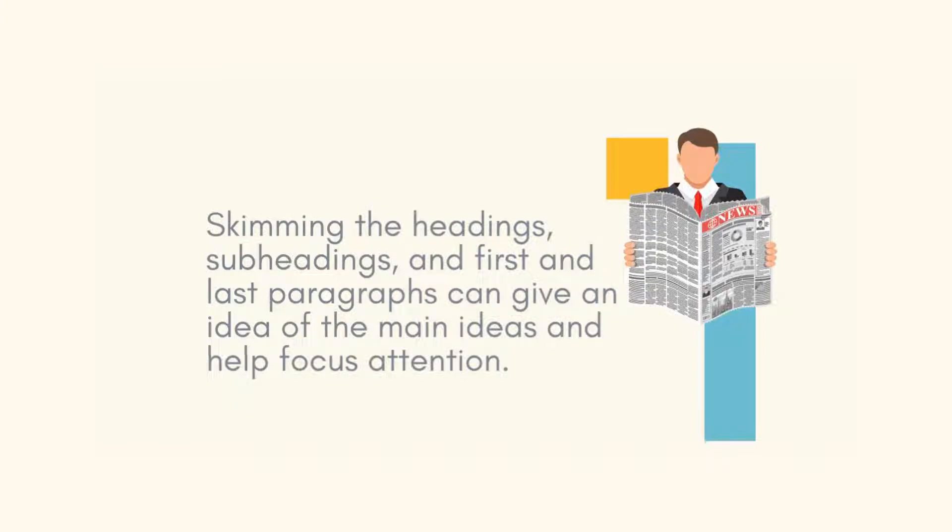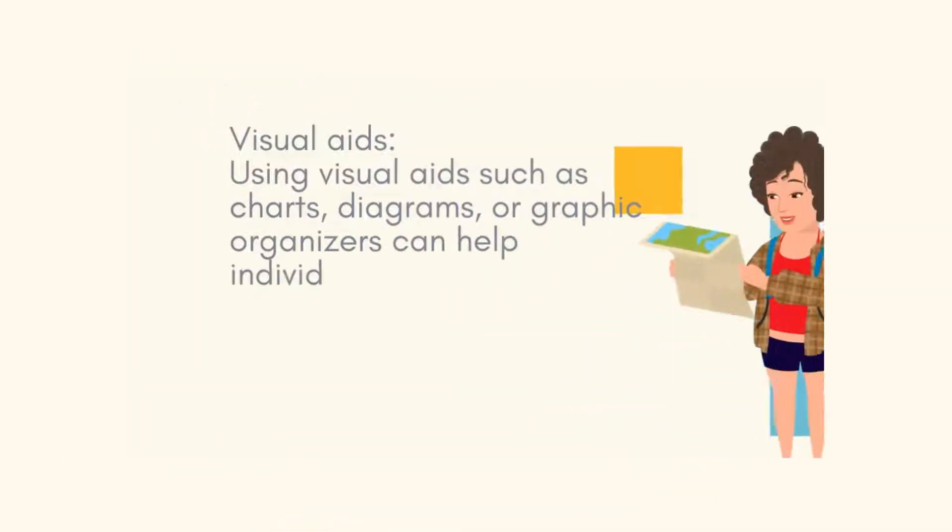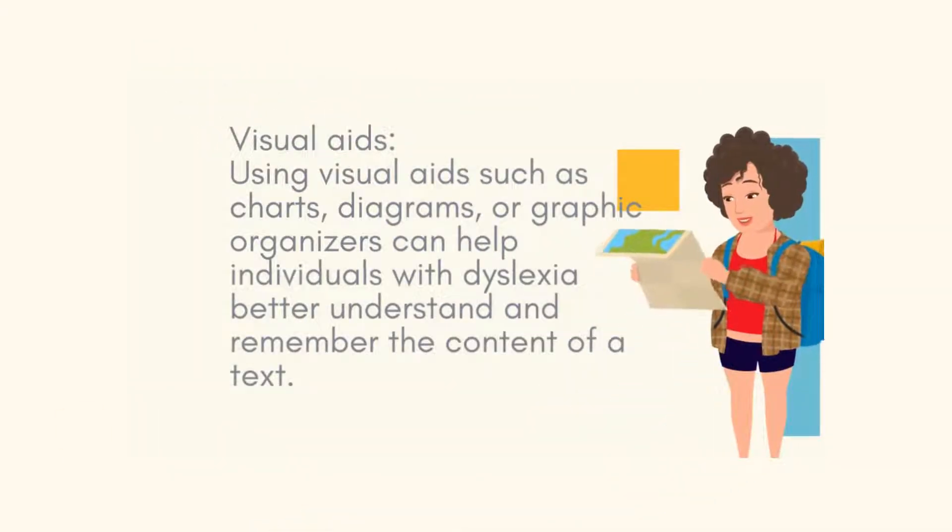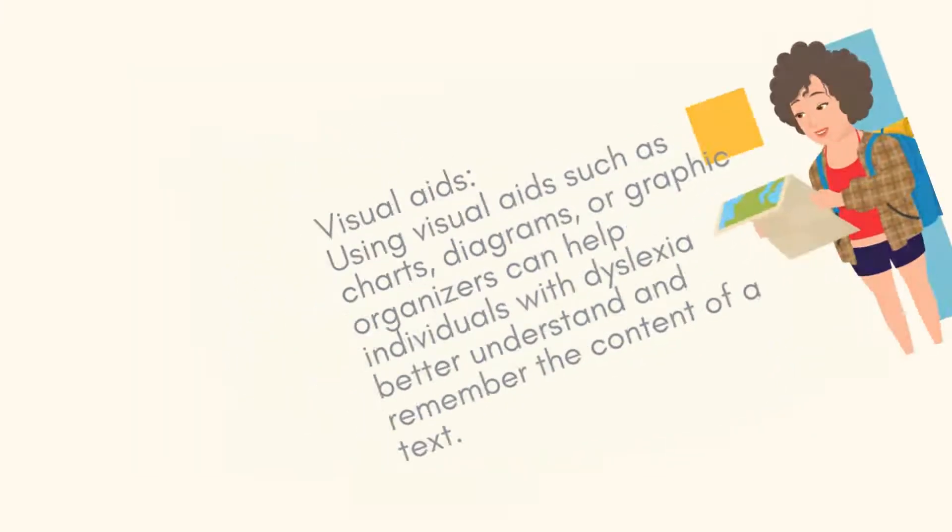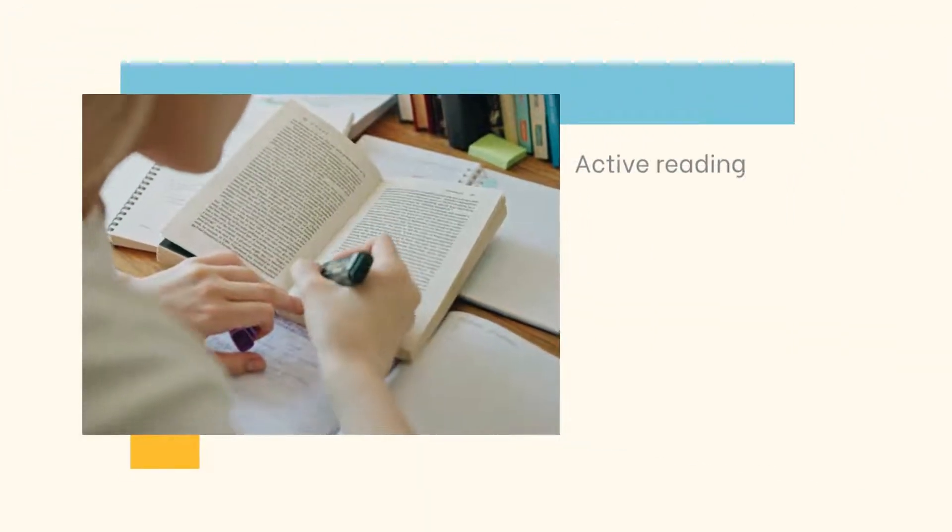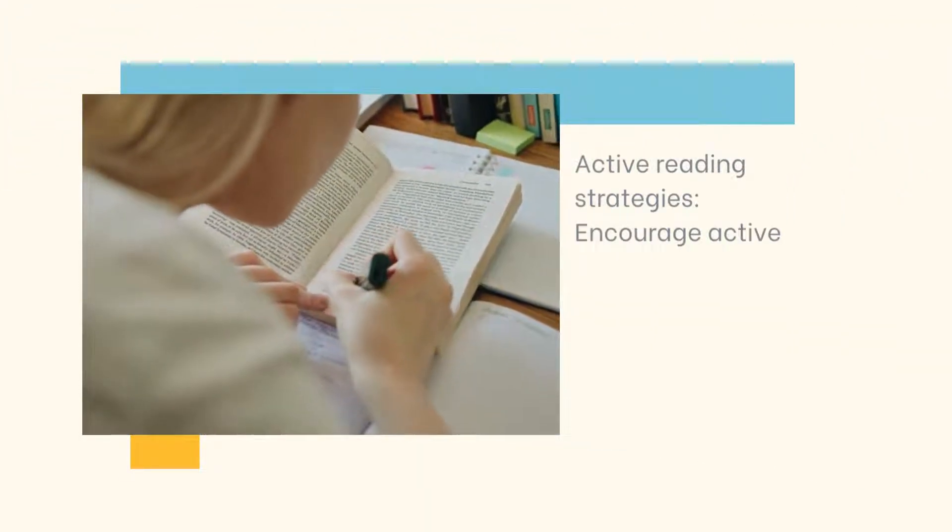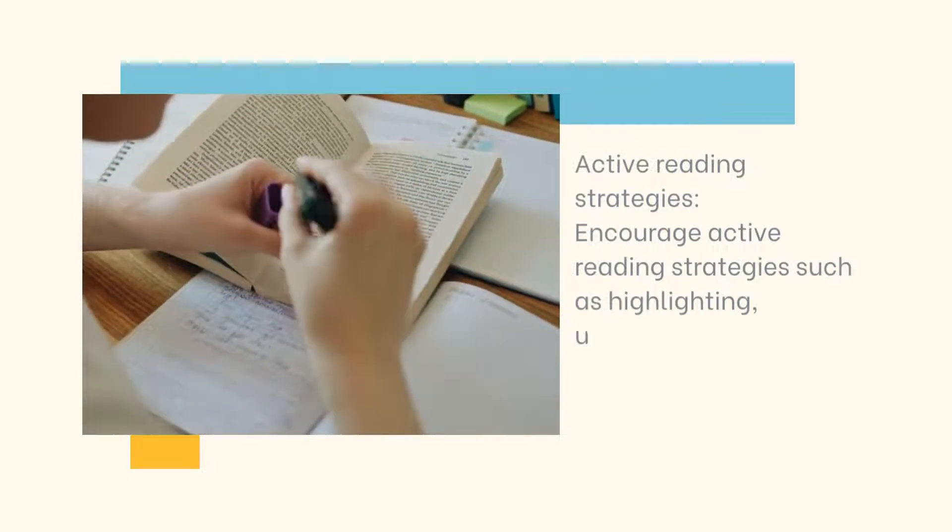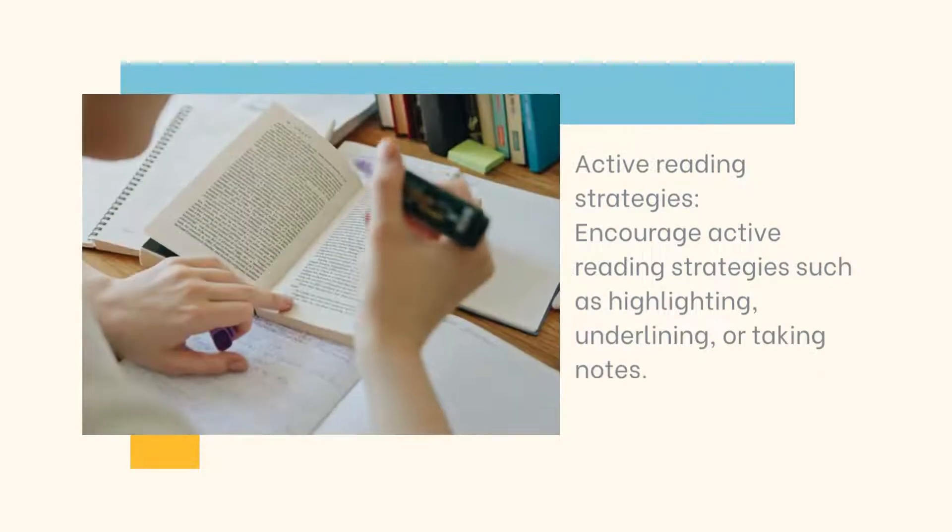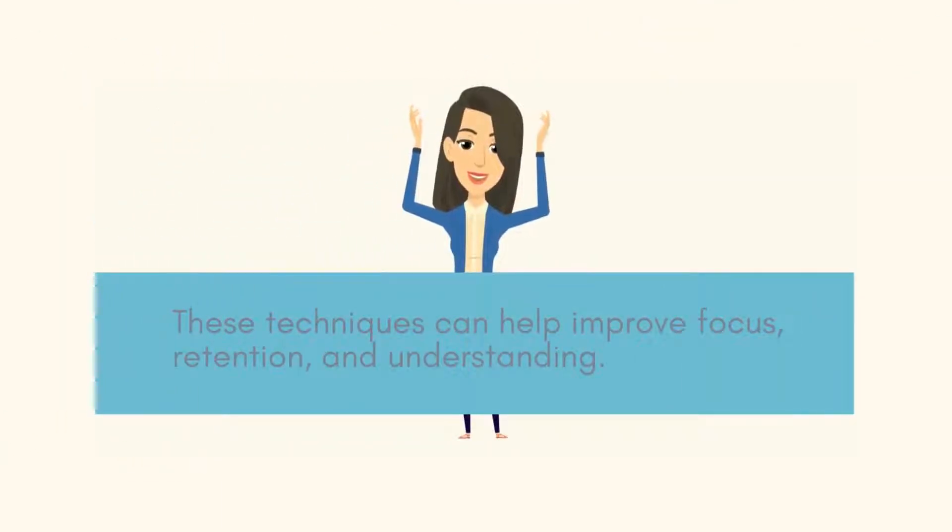Two: visual aids. Using visual aids such as charts, diagrams, or graphic organizers can help individuals with dyslexia better understand and remember the content of a text. Three: active reading strategies. Encourage active reading strategies such as highlighting, underlining, or taking notes. These techniques can help improve focus, retention, and understanding.